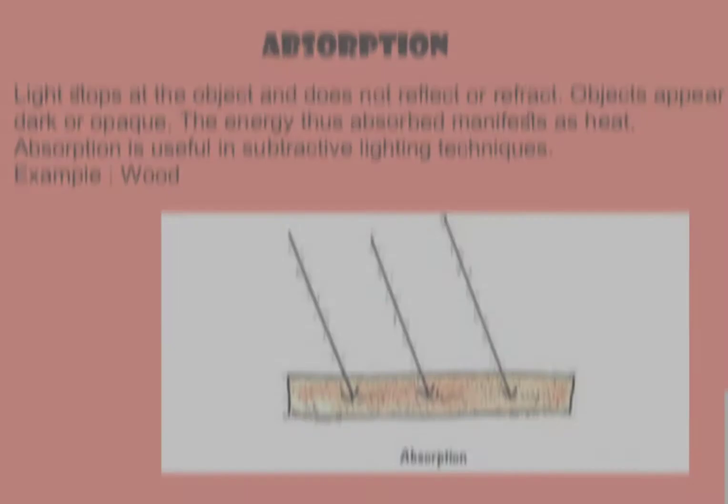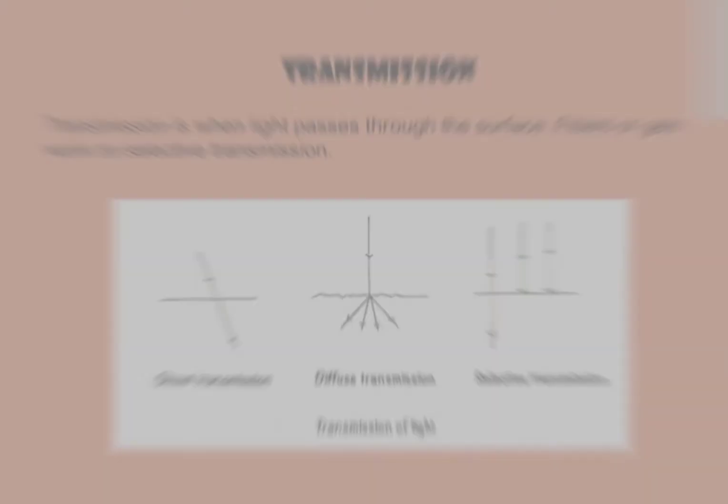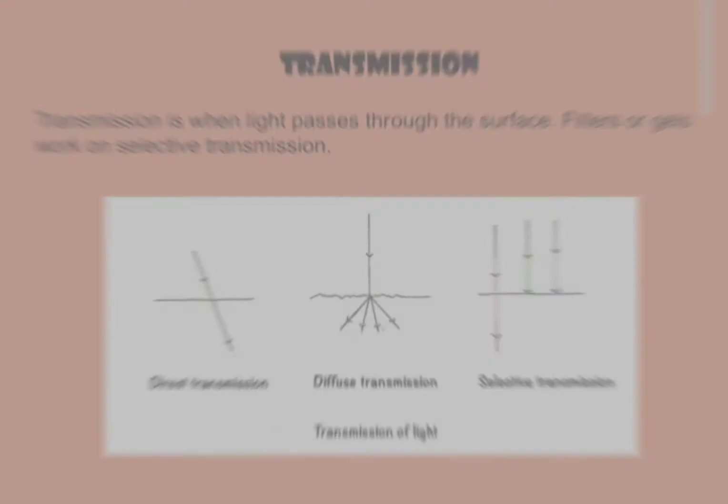Next is absorption. Light stops at the object and does not reflect or refract — objects appear dark. The energy absorbed manifests as heat. Absorption is useful in subtractive lighting techniques. An example is wood.